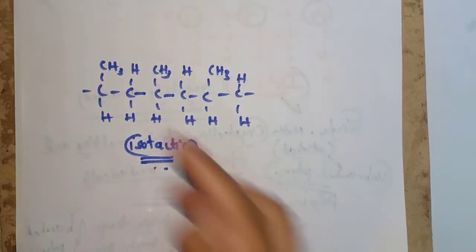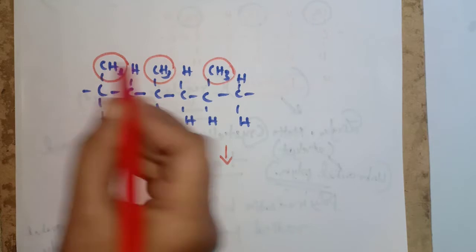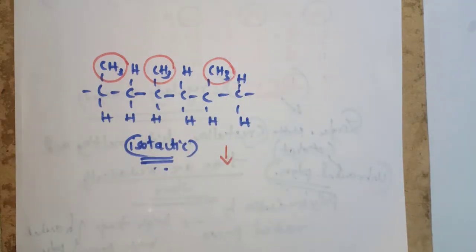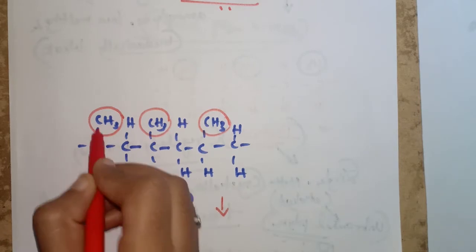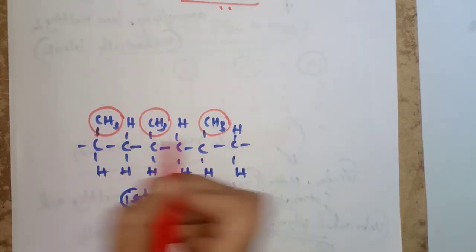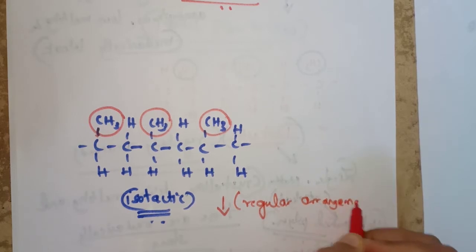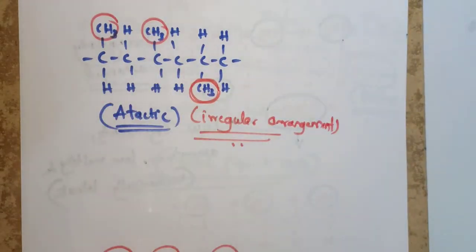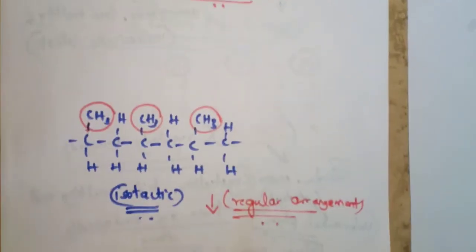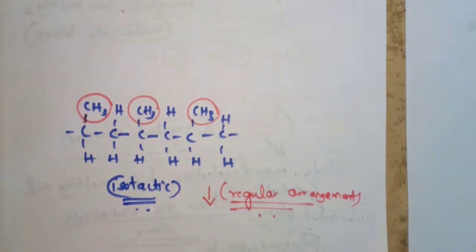In isotactic polymers, the attached side groups — CH3, CH3, CH3, CH3 — are all oriented in only one plane, showing a regular arrangement. In atactic polymers there is irregular arrangement (groups on different sides), whereas in isotactic polymers there is regular arrangement with all groups on the same side.